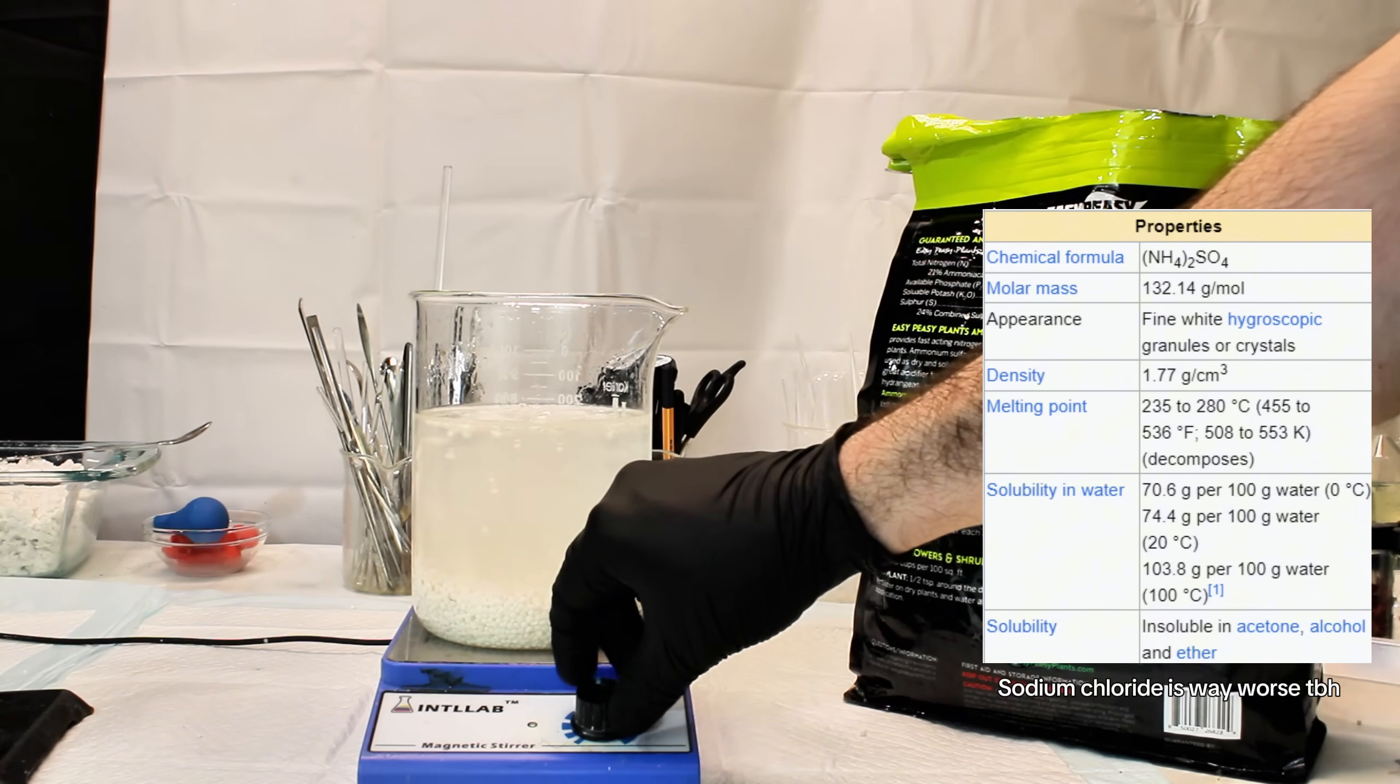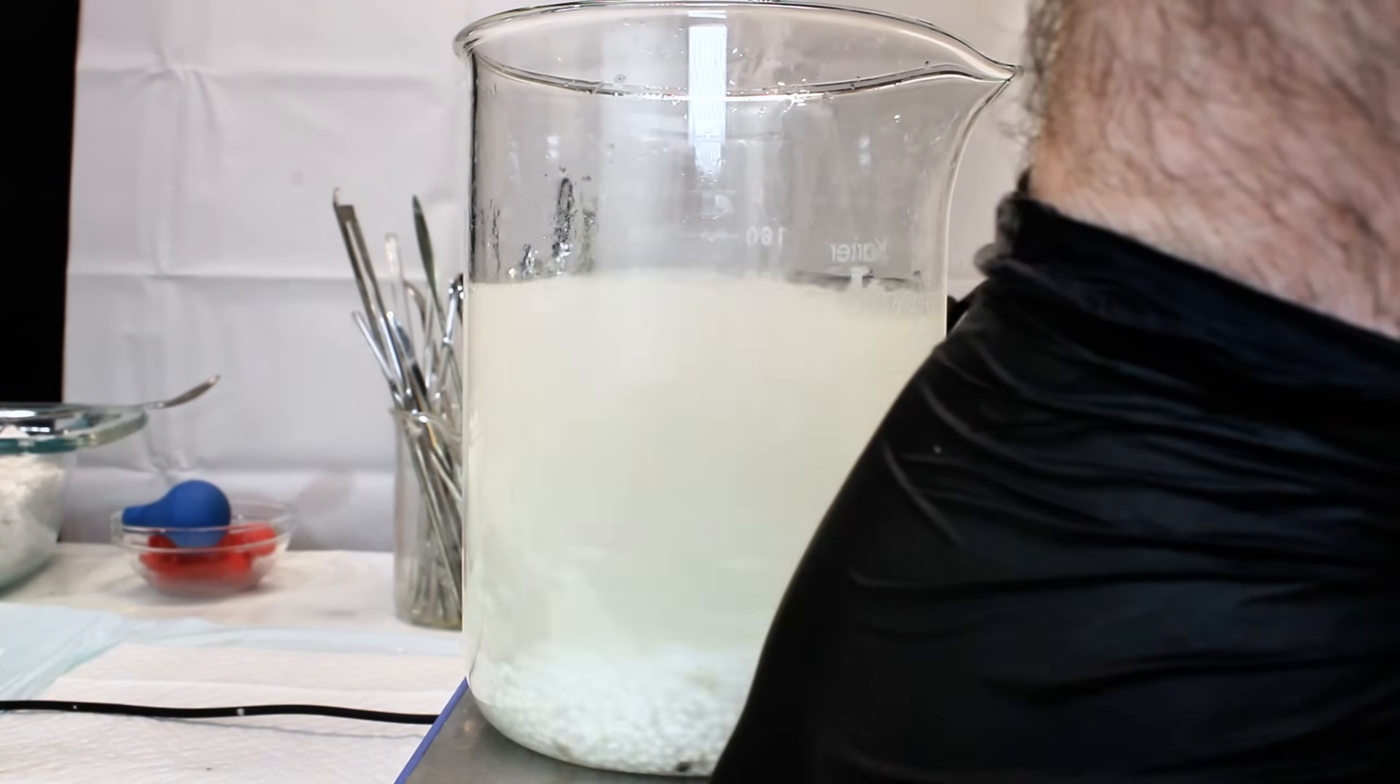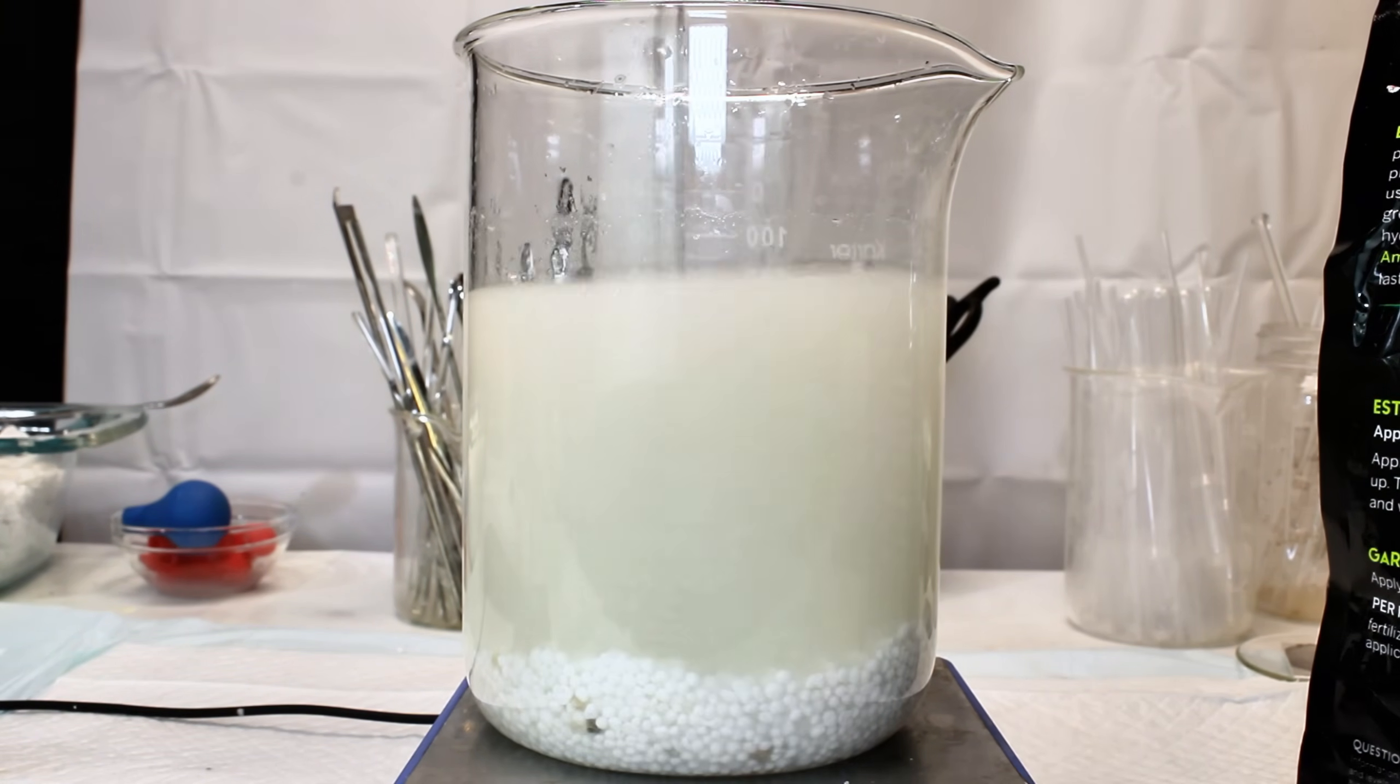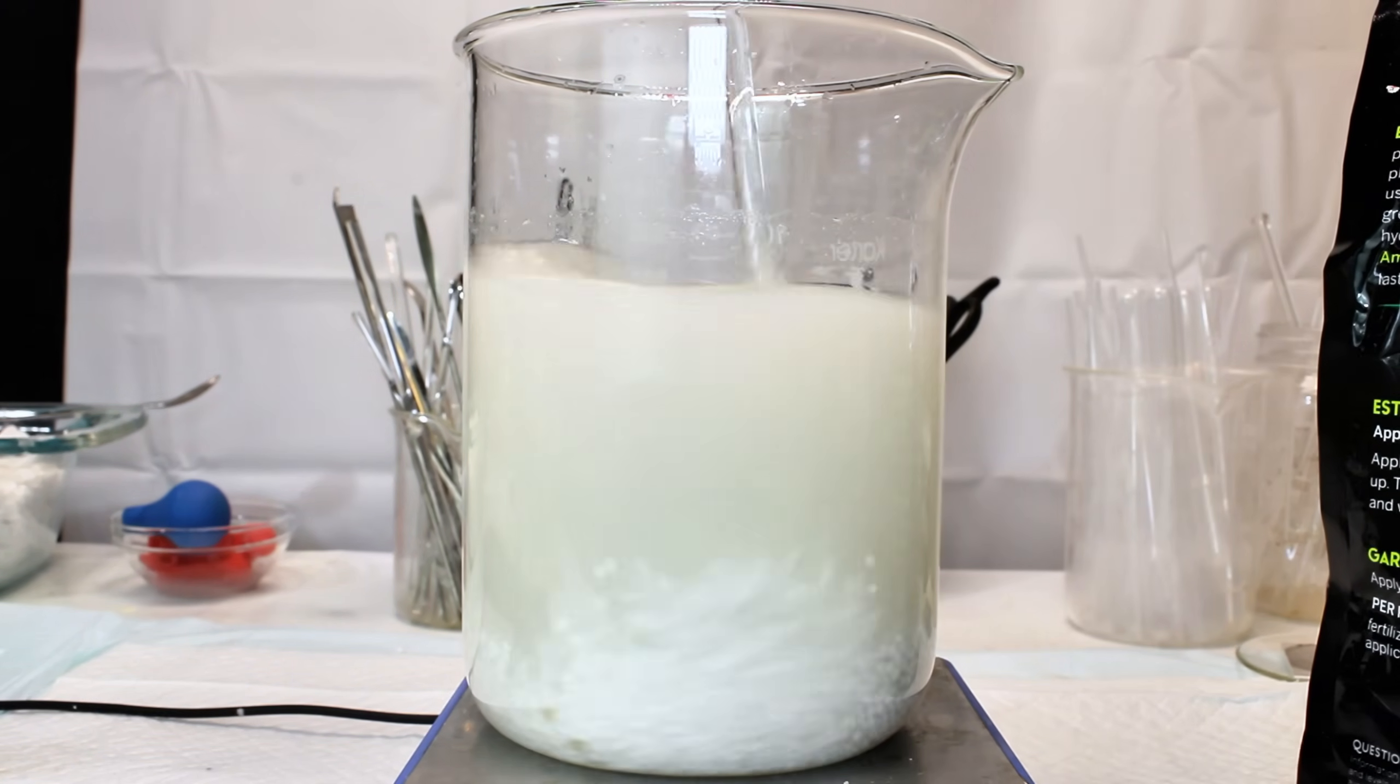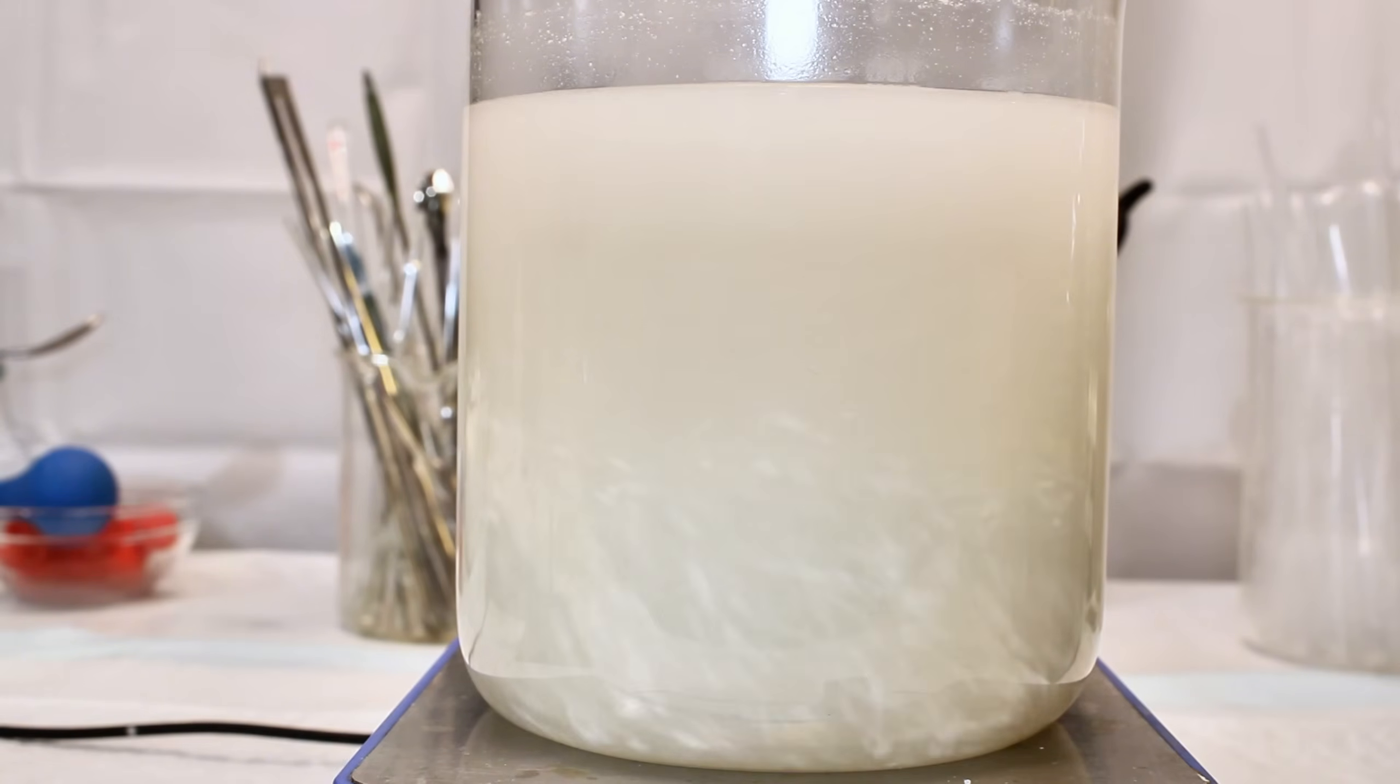That said, the only viable way to purify this is using evaporation, which is also the only viable way to purify sodium chloride for the same reason. In any case, to get started, I went ahead and dissolved as much ammonium sulfate as I could in a minimal volume of water, except this time I used 600 milliliters instead of 250.